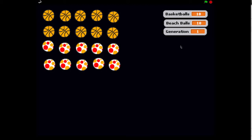Here we're looking at our population of 20 balls. We start off with 10 basketballs and 10 beach balls. That's 50% for each one, and that's our first generation.